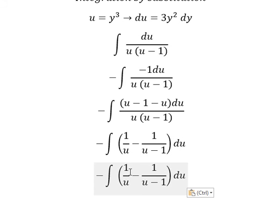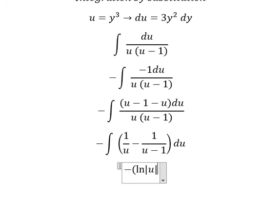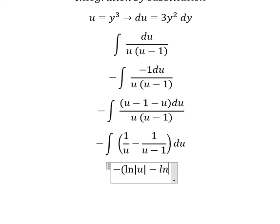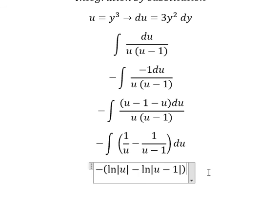The integration of 1 over u gives ln of the absolute value of u. The integration of 1 over u minus 1 gives ln of the absolute value of u minus 1. And we add the constant c.